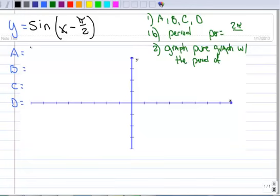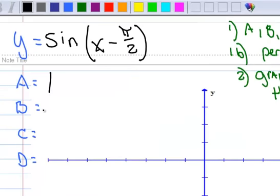So again, the first thing we want to do is identify the A and the B and the C, which is a positive pi over 2.